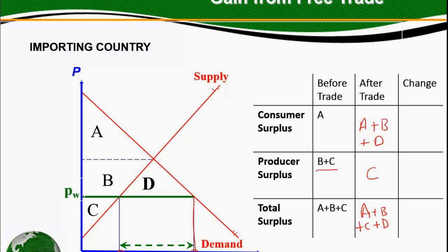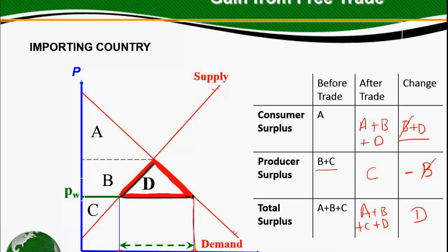So what is the change in consumer surplus? It's B plus D, and it's positive. What about the producer surplus? The producer surplus declines by the amount B — this is the area which is captured by the consumers. So the positive B and the negative B are exactly the same areas. What is the change in total surplus? It is plus D. This is the area that is the gain from trade for this country that imports this good.